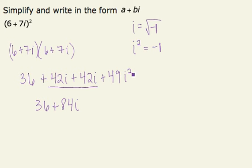Now, 49i squared is really 49 times i squared is negative 1. So 49 times negative 1, or negative 49.